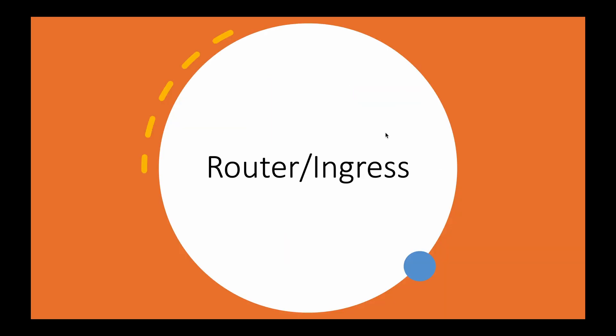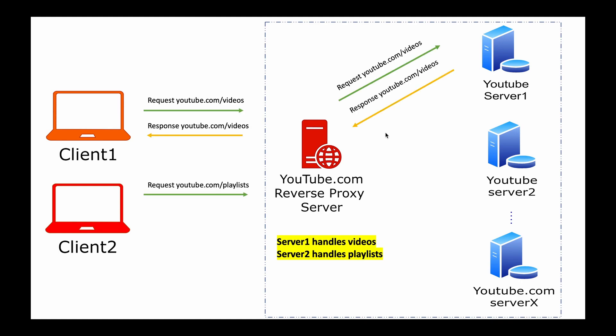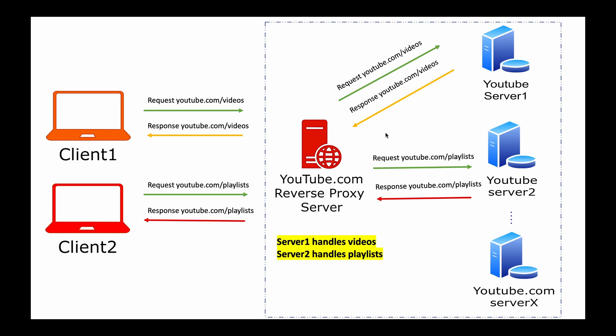In the microservices architecture world, ingress or routing is a great advantage of reverse proxy. In this case, the reverse proxy acts as a router in Kubernetes or microservices architecture. It can map to actual services running. For example, if a client requests playlists, it goes to server two. However, if the client is requesting videos, it knows that server one needs to serve this traffic.